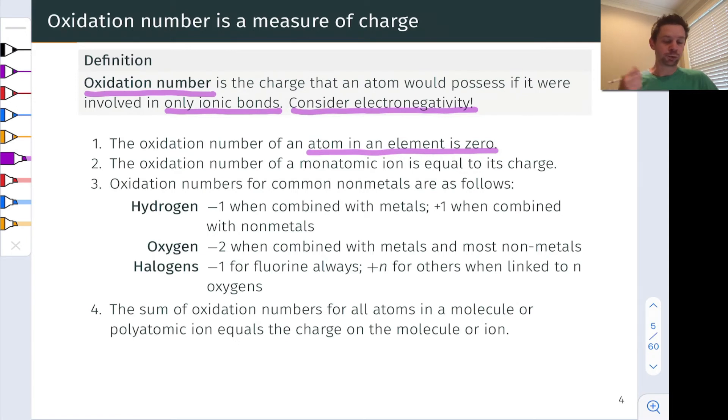As we just mentioned, if we're talking about a monatomic ion, Na+, Li+, Mg2+, Al3+, the oxidation number of a monatomic ion is simply equal to its charge.